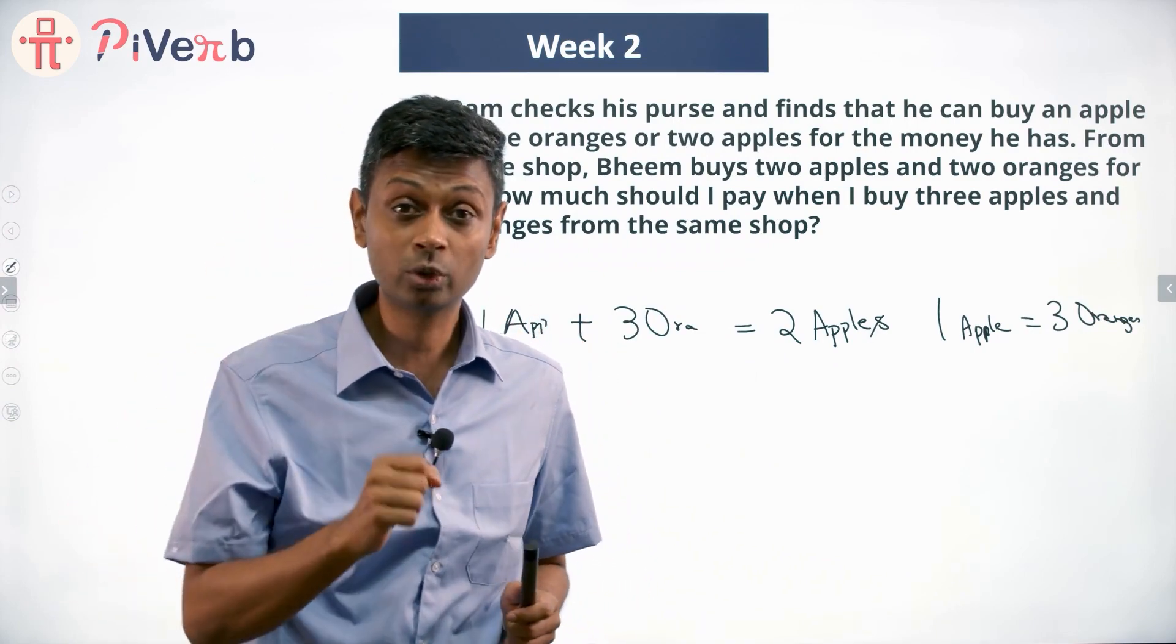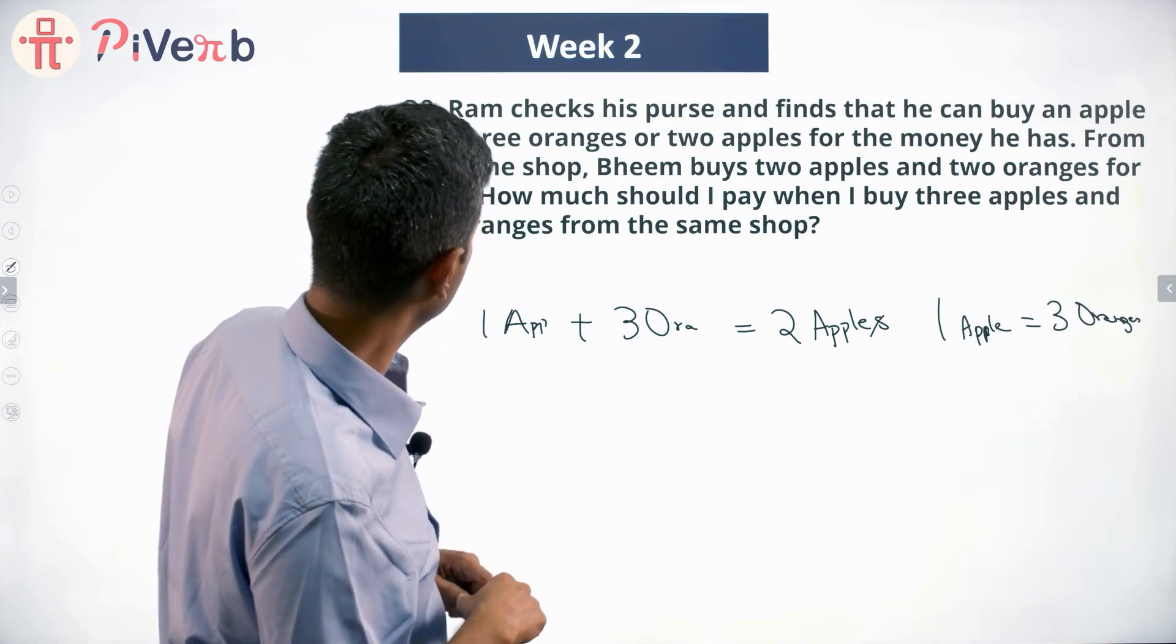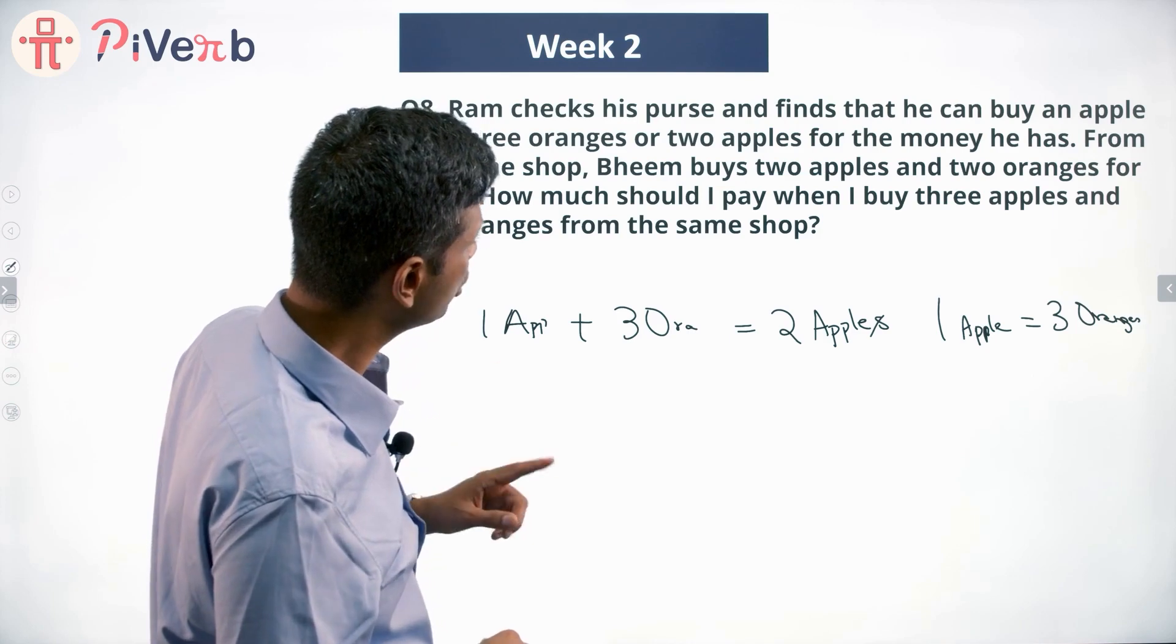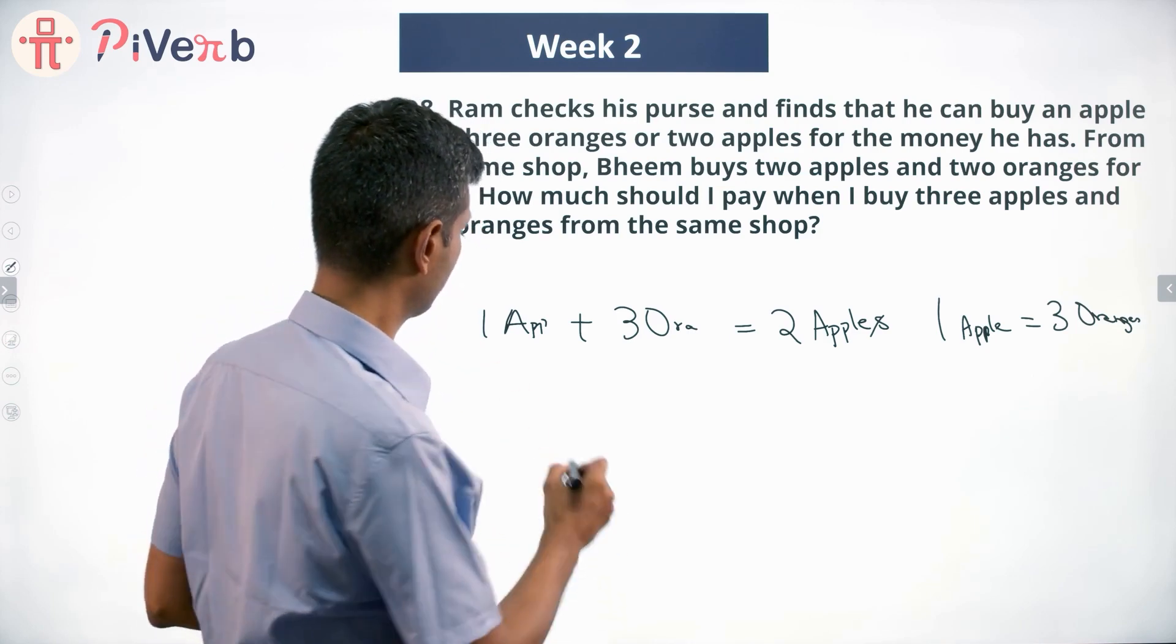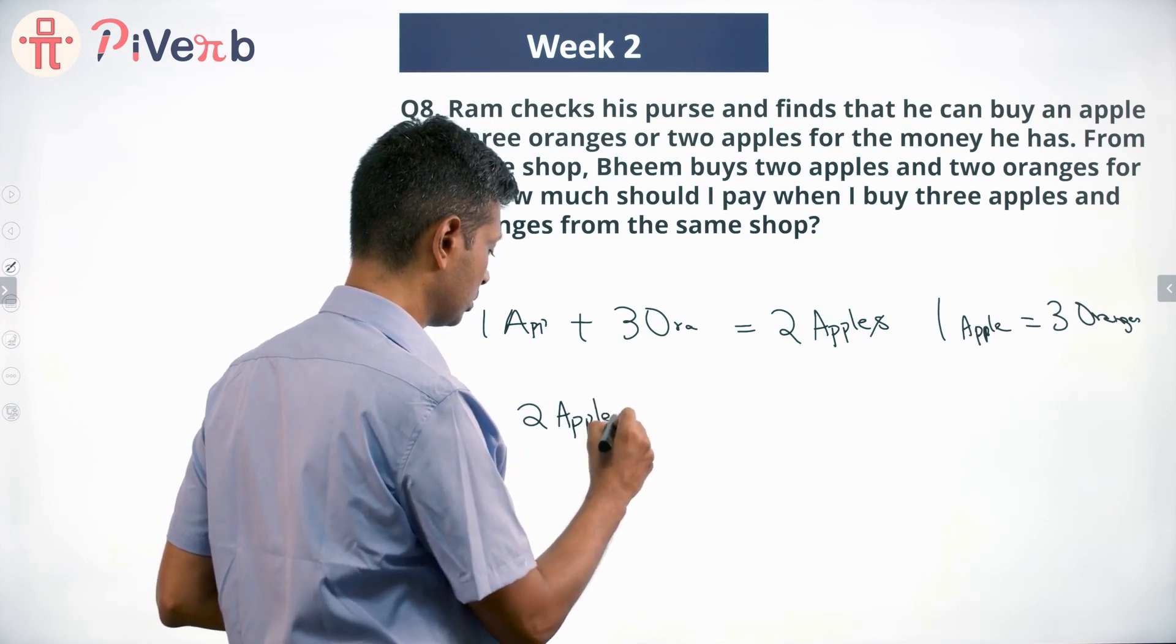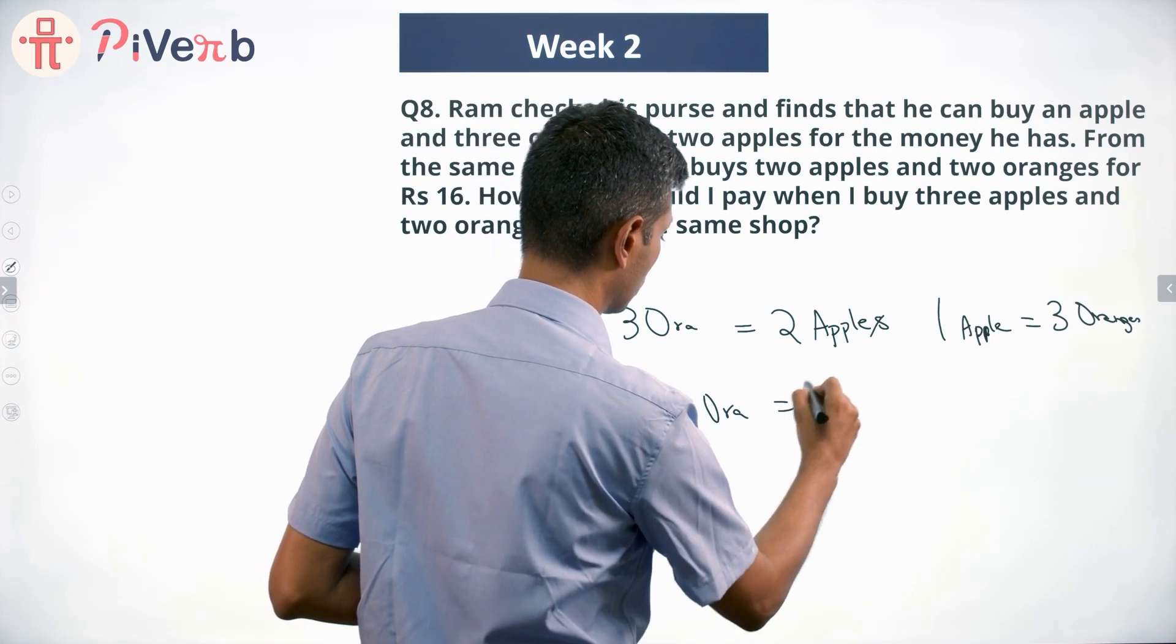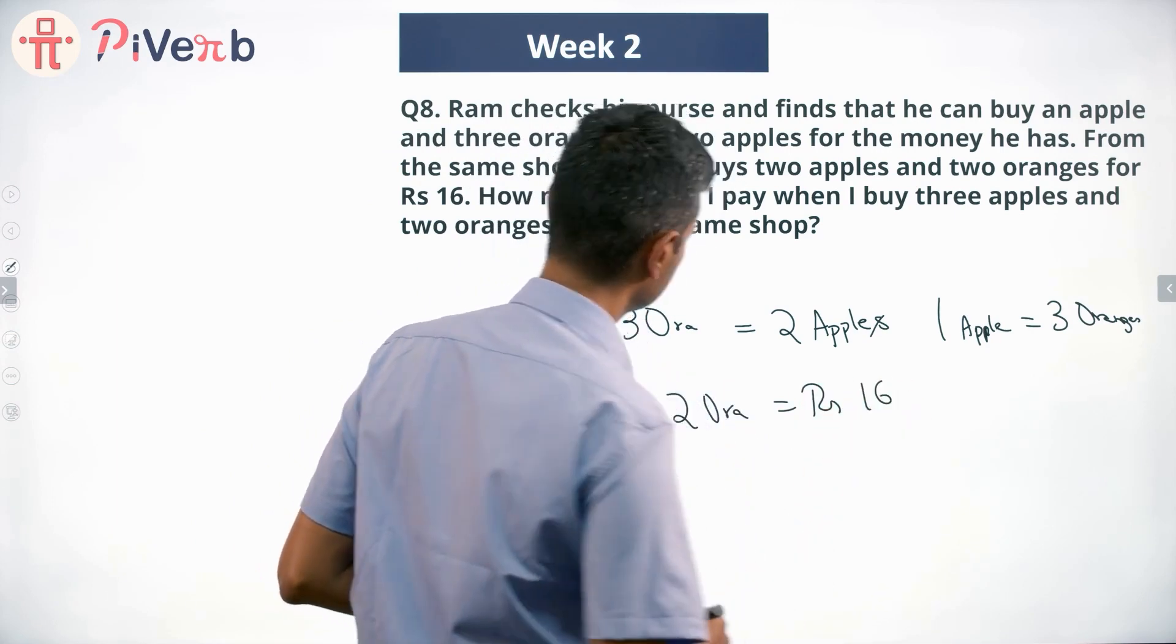...for that price you can buy three oranges. Lovely. Now let's go to the rest of this. From the same shop, Bheem buys two apples and two oranges for rupees 16. Two apples plus two oranges for rupees 16. Lovely.